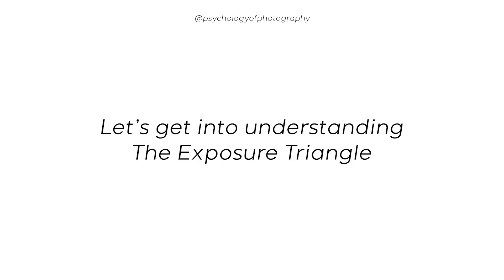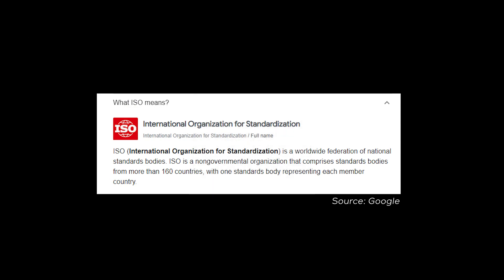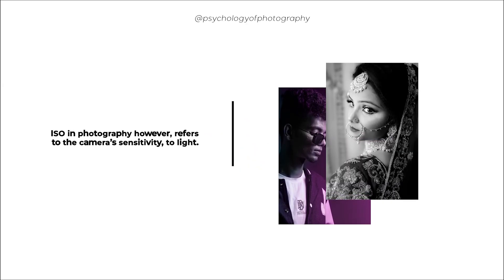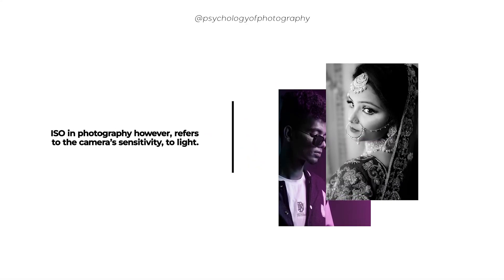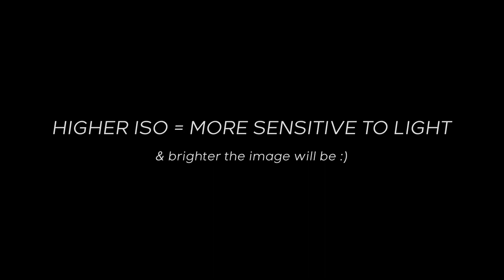Let's get into understanding the exposure triangle and we start with ISO. ISO stands for International Standards Organization and it refers to the camera's sensitivity to light. The higher the ISO value, the more sensitive the camera is to light and the brighter the image will be.